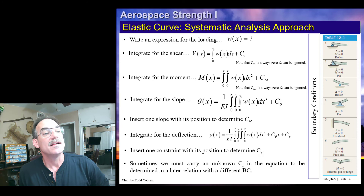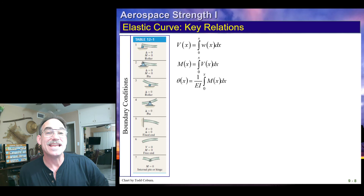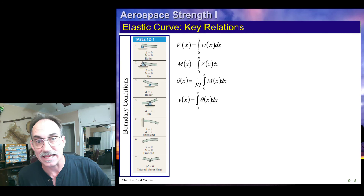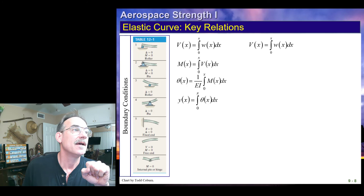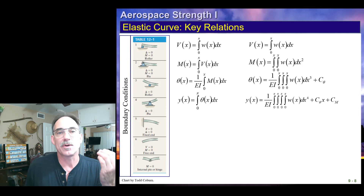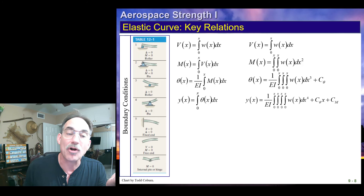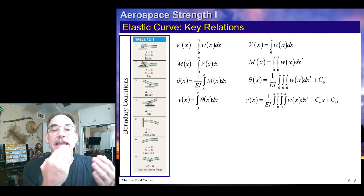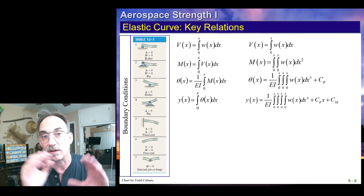Here are some boundary constraints shown to the right — that chart is from Hibbler. To summarize our relations: V of x equals the integral of the load function; moment is the integral of the shear function; slope is the integral of the moment function divided by EI; and y is the integral of the slope function — which already has EI in it. Another way to write this is that all of them are integrals of the loading diagram: shear is the first integral, moment is the second, slope is the third, and deflection is the fourth integral. Don't forget — the fourth derivative of the deflection equals 1 over EI times the loading. These are very powerful equations.